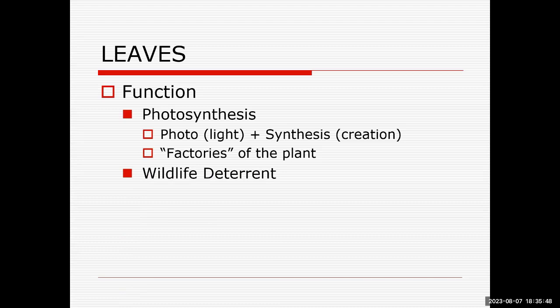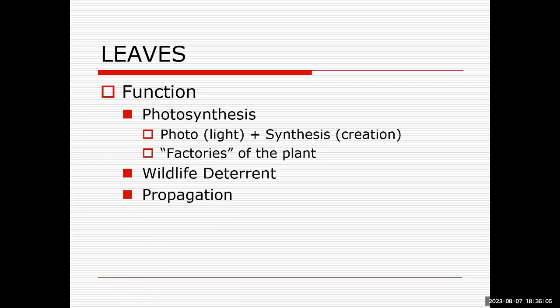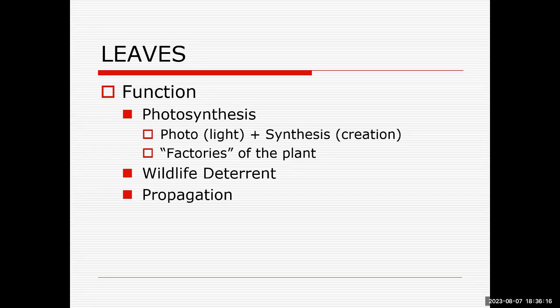Leaves can also be used by a plant as a wildlife deterrent, because many plants have prickly leaves that keep things from wanting to eat them, particularly in dry climates like ours. Propagation is another function — some leaves, particularly succulent leaves, can grow other plantlets on them, or if a leaf hits the ground you'll sometimes see plantlets start on the edges. This is more likely with succulent leaves than a traditional shrub-type leaf, especially if that leaf is detached from the parent plant.